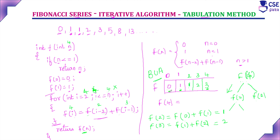Since the tabulation method starts from the lowest value and stores results in a table, it is the bottom-up approach. Memoization and tabulation are the two methods used in dynamic programming. In this session, we discussed the tabulation method to generate the Fibonacci series using the iterative algorithm. In the next session, we will move on to dynamic programming problems — Warshall's algorithm and Floyd's algorithm.